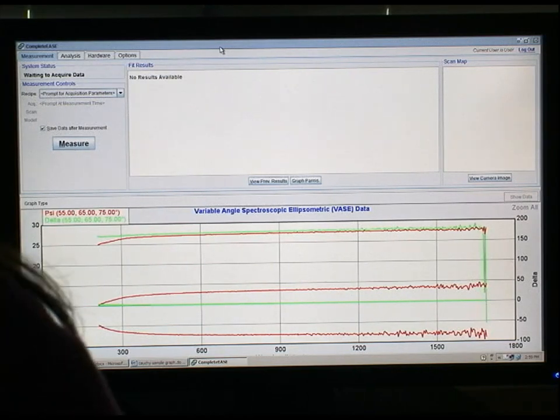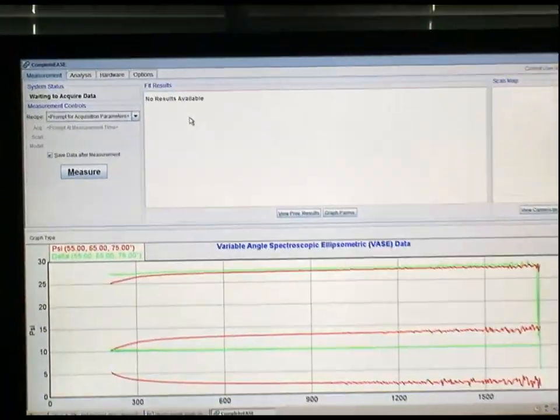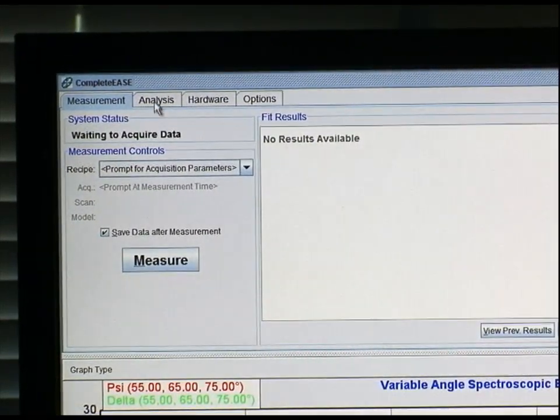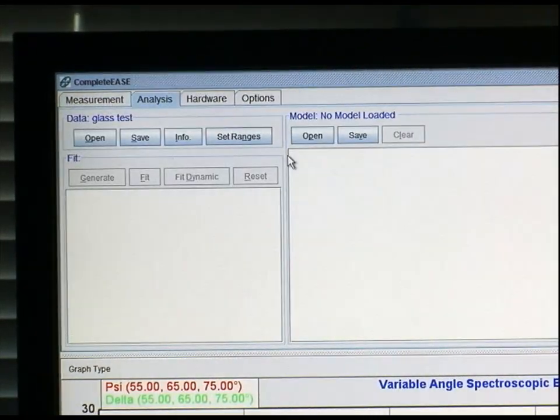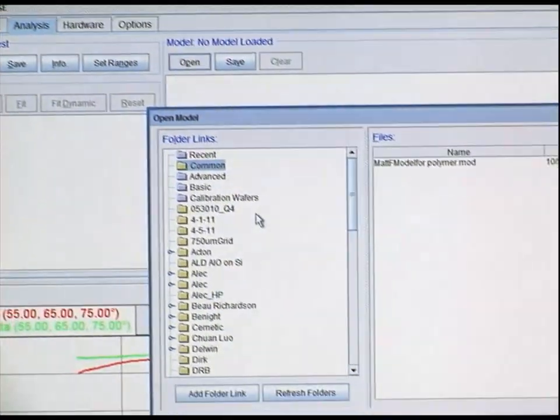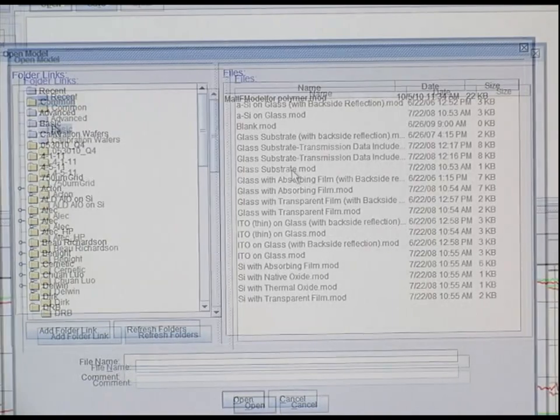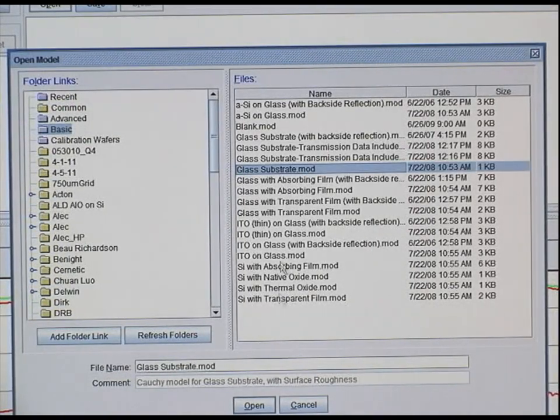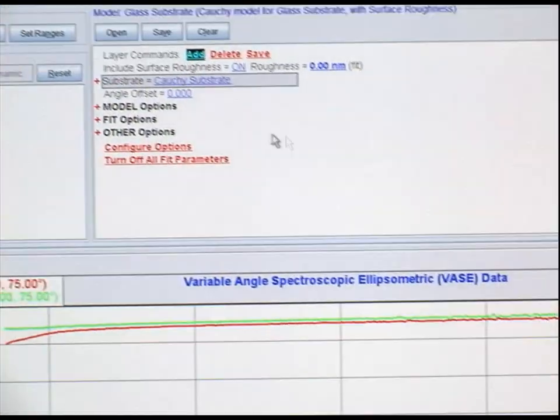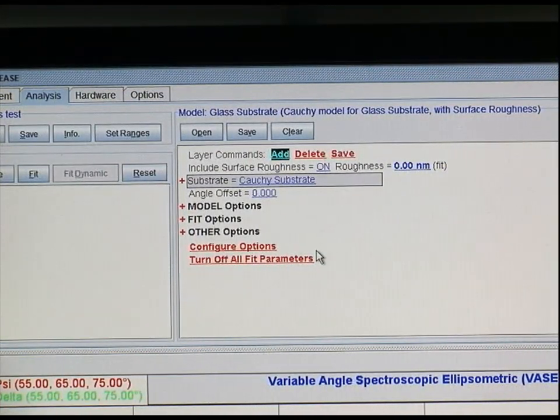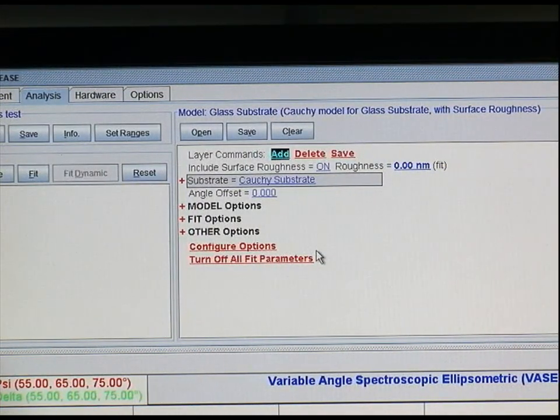The first thing we need to do is build a model. If we go to the analysis tab, at least in this software, we can open a model that we want to start with. In the instrument, there's several different models built in. We'll start with the glass substrate since that's what we've measured. That gives us the starting point to build a model to adequately fit the data from our glass sample.